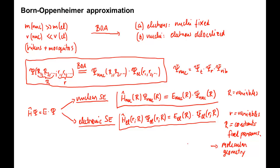In summary, the Born-Oppenheimer approximation utilizes the differences of masses and velocities of nuclei and electrons. It separates the motions by treating nuclei as fixed and electrons as smeared out. The wave function in the Born-Oppenheimer approximation is a single product of a nuclear and an electronic wave function. And lastly, in the electronic wave function, the nuclear coordinates enter as fixed parameters, specifying the structure of the molecule.